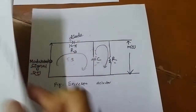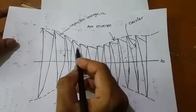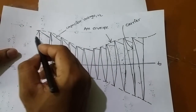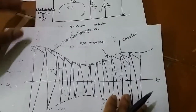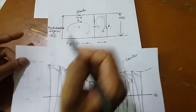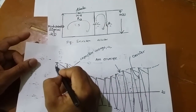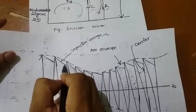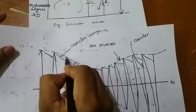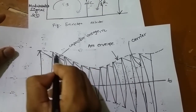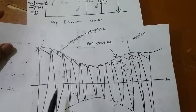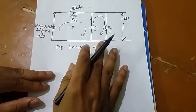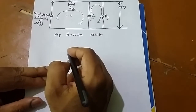This is the envelope detector signal. In the positive half cycle the capacitor charges; in the negative half cycle it discharges. This alternating charging and discharging, when joined together, produces a smooth modulating signal. This is the principle of the envelope detector. Now we will discuss the threshold of the envelope detector.